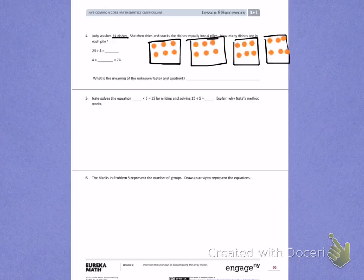Judy had 24 dishes that she divided into 4 equal piles. When I look inside each pile, I can see there are 6 in the first pile, 6 in the second pile, 6 in the third pile, and 6 in the fourth pile.